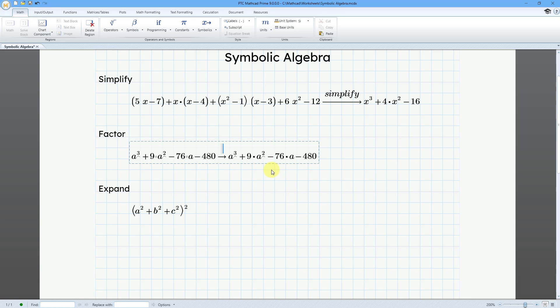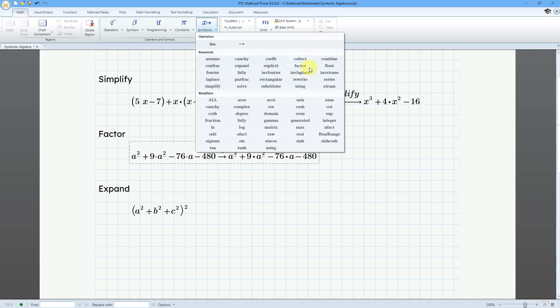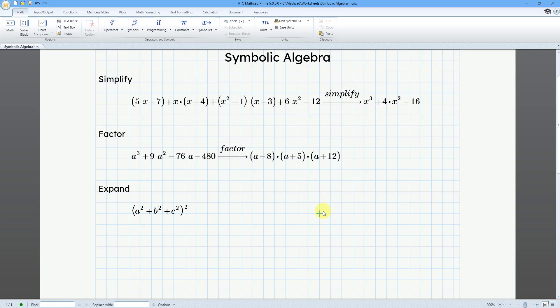Right now we just have the same thing over on the other side. Let's go to Symbolics and we will use our factor keyword and then click on the outside.